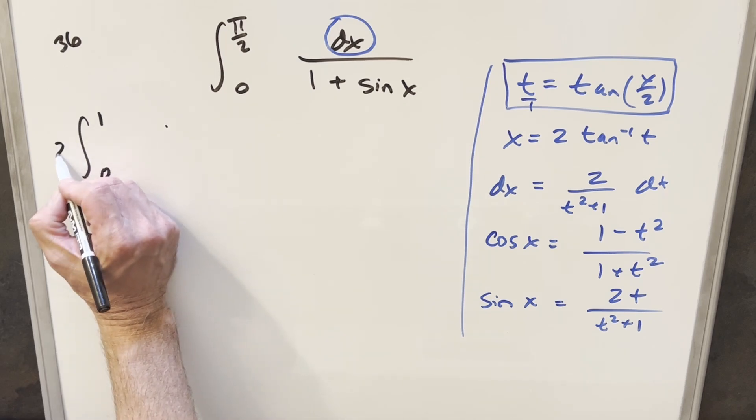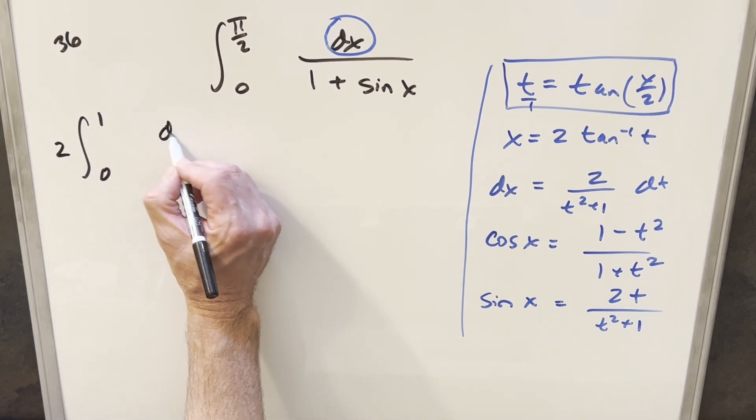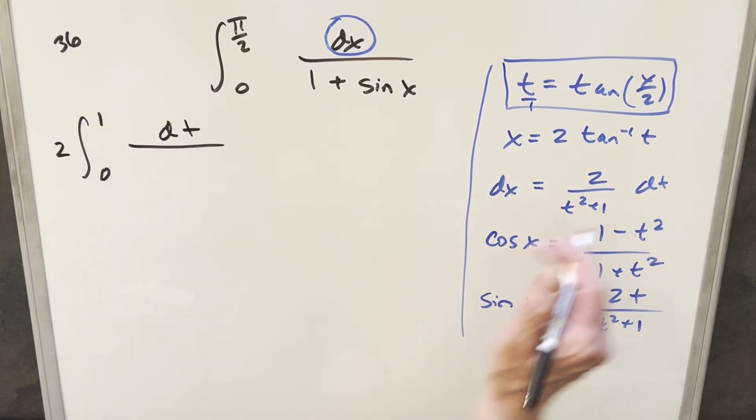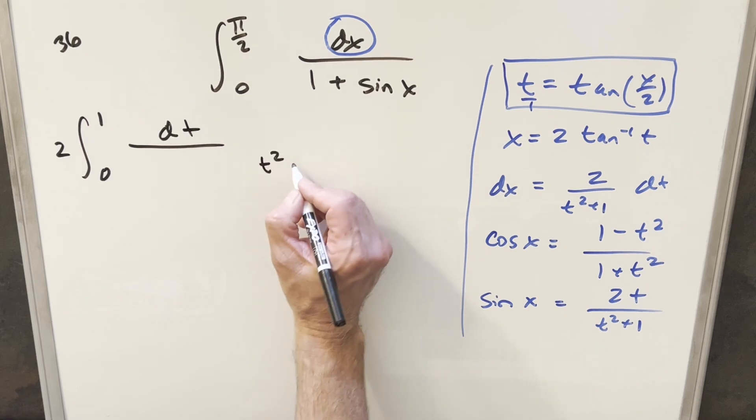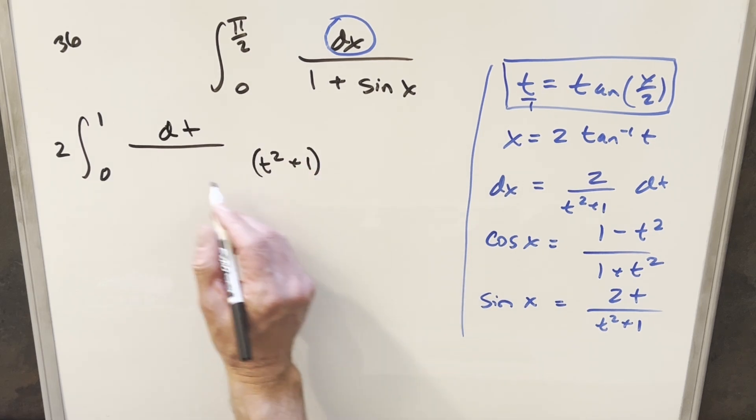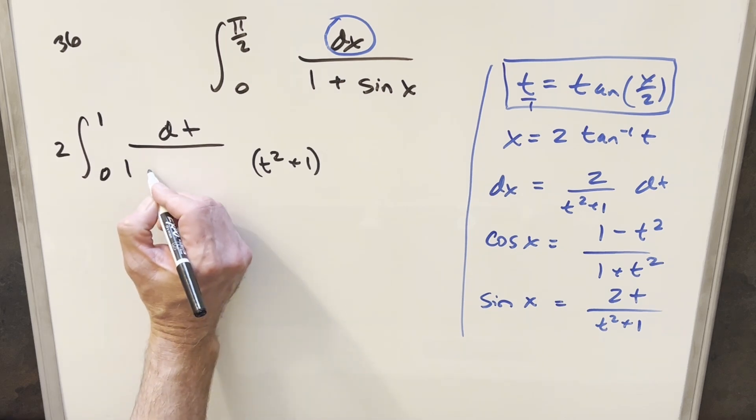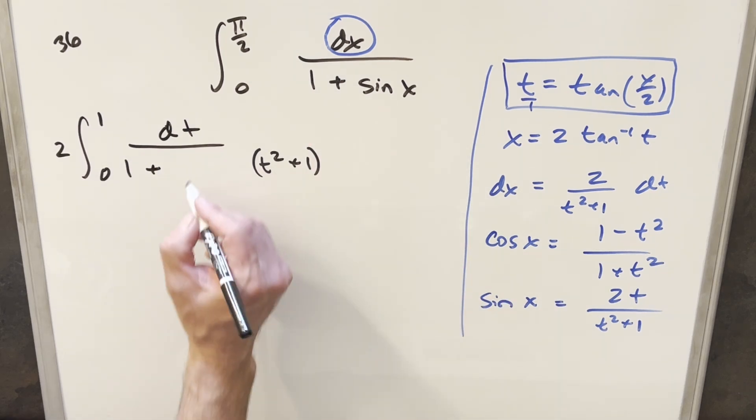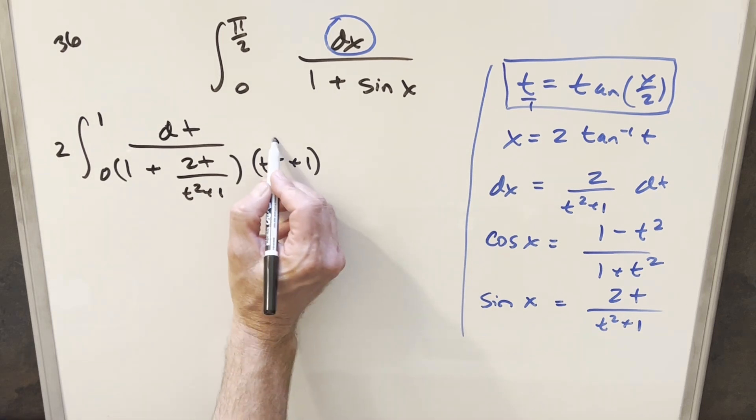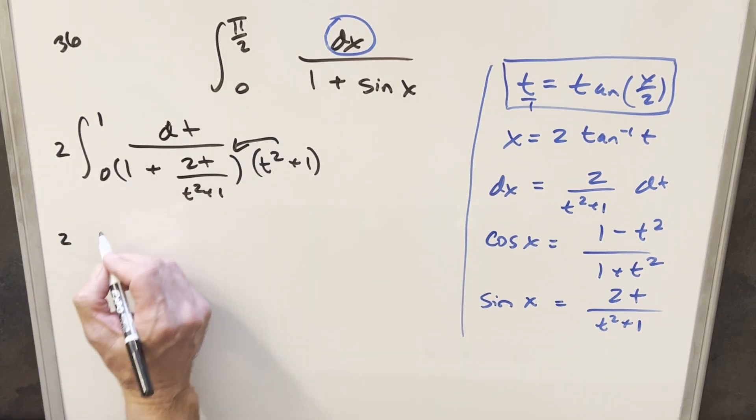And then for our dx value, we found that over here. I have this 2 in the numerator. I'm actually going to take this 2 and bring it up front. And then we're going to have this, just this dt over t²+1. I'm going to bring it out here because I'm going to want to multiply it in later. So I'm just going to write it like this for now. And then for the denominator, we end up with 1 plus our sine value, which is going to be 2t over t²+1.